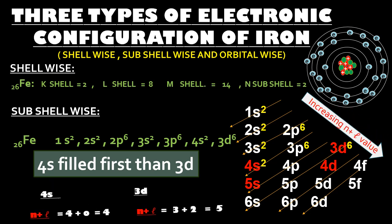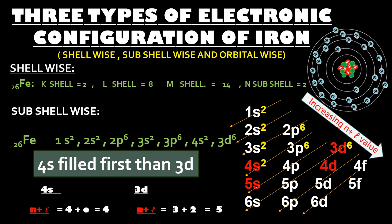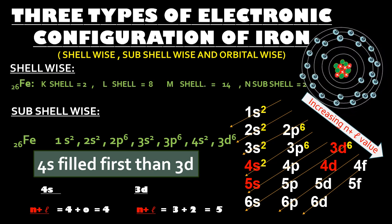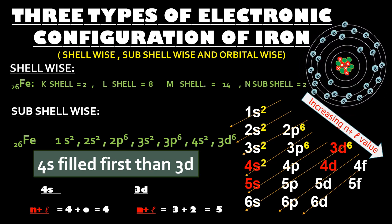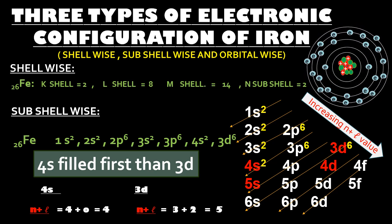Now the subshell-wise electronic configuration is 1s², 2s², 2p⁶, 3s², 3p⁶, 4s², and 3d⁶.